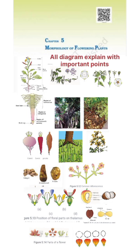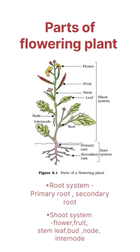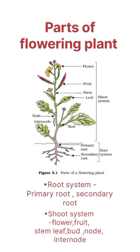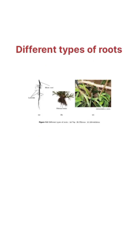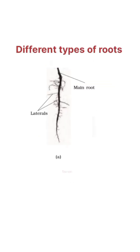Chapter 5: Morphology of Flowering Plants — all diagrams explained with important points. Parts of flowering plants: Root System, Shoot System. Different types of roots: 1. Tap Root.